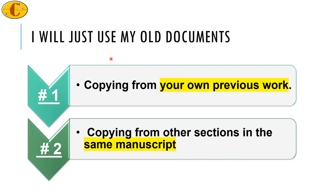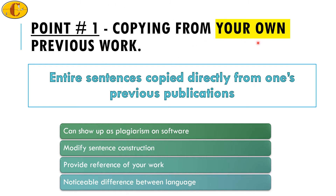Self-plagiarism comes in two forms: copying from your own previous work into a new manuscript, or copying from the same manuscript in different sections. On the first point — copying from your own previous work — if you have written a preliminary internal report and you copy entire sentences directly, it may not be detected online since the internal report is private. However, if you have used that data in a published work, the new research will be checked for plagiarism, and your own work can show up as the plagiarized document.